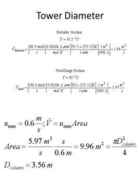The maximum velocity in our column is 0.6 meters per second. The volumetric flow rate equals maximum velocity times area, so we solve for the tower area by dividing volumetric flow rate by velocity, giving 9.96 square meters. Using the formula for the area of a cylinder, the diameter of our column should be 3.56 meters, ensuring the velocity never exceeds 0.6 meters per second.